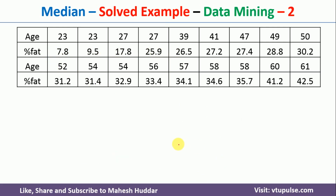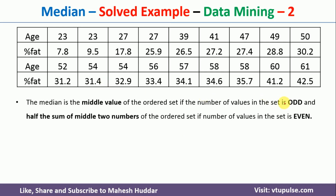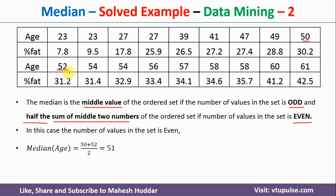Coming back to the next metric, that is median. To find the median, we need to know how many elements are in the data. In this case we have 18 examples, which is an even number. If it is an even number, we take the sum of the middle two numbers and then divide by 2. If we have an odd number of elements, we take the middle value directly. Since we have 18 elements, we take the 9th and 10th elements of age, which gives 51. Similarly for fat, the 9th and 10th elements give a median of 30.7.